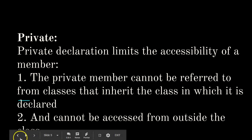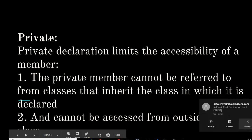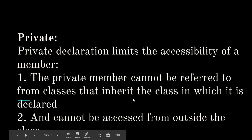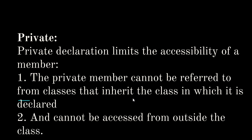The next thing we're looking at is: what happens when you declare something as private? Private declaration limits the accessibility of a member. The private member cannot be referred to from classes that inherit the class in which it is declared, and cannot be accessed from outside the class. In simple English, if you declare a variable or a function as private, you cannot access it from outside that class — it will be as if it doesn't exist. Even if another class inherits that class, it will still not be able to access it.